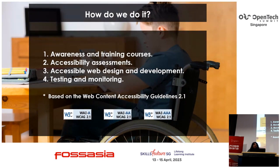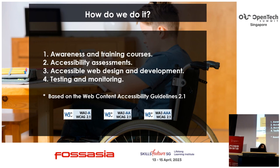How do we do it? We do awareness trainings, we do accessibility assessments — whether it's audits, direct implementations, testing and monitoring — and we follow the web content accessibility guidelines set by the W3C consortium. We're currently at version 2.1, with 2.2 releasing in May. What we're saying is we're not doing anything new — it's always been there, we're just implementing it.